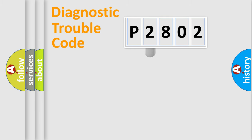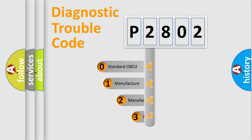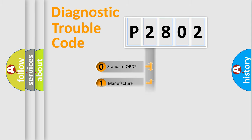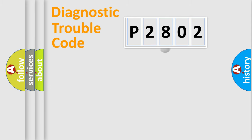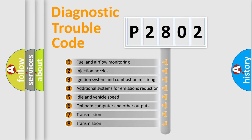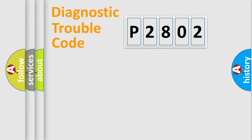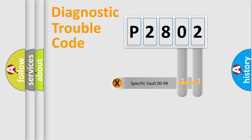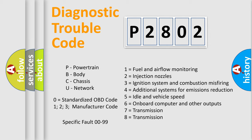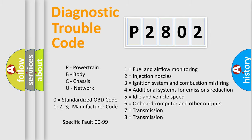This distribution is defined in the first character of the code. If the second character is zero, it is a standardized error. In the case of numbers 1, 2, or 3, it is a manufacturer-specific error. The third character specifies a subset of errors. This distribution is valid only for the standardized DTC code, and only the last two characters define the specific fault of the group.